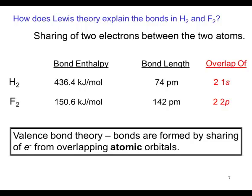For fluorine, notice that the bond length is much larger. Here we are overlapping two of the two p orbitals. The valence bond theory says that bonds are formed by sharing of electrons from overlapping atomic orbitals.